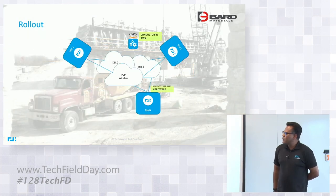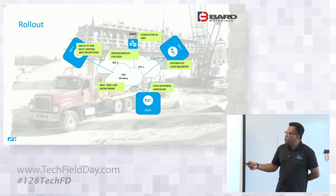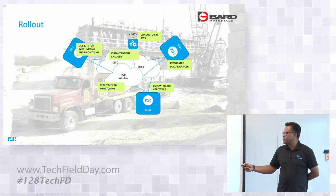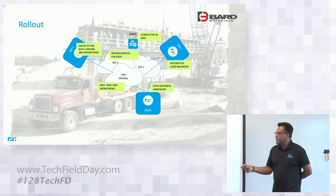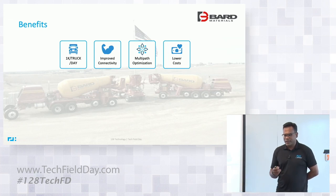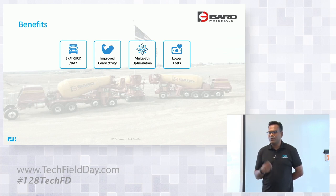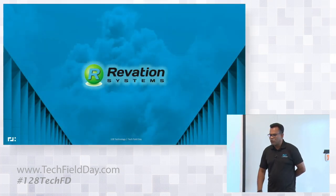Bard Materials switched to the 128T solution, placing the conductor in AWS cloud. They use QoS and traffic engineering for rate limiting and prioritizing the video feed, with LTE for multiple connections at remote sites, enabling instantaneous failovers. They also use LANA Intel four-core processor boxes. They believe improved connectivity saves 1K per truck per day, enabling better business decisions. They have multipath optimization and lower costs — overall saving about 50% compared to any other SD-WAN offering they had.